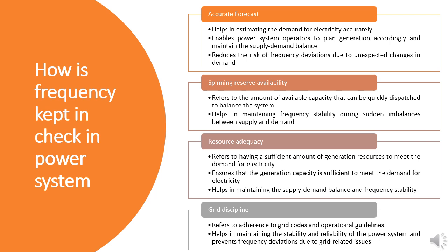Spinning reserve availability is another key factor in maintaining frequency stability during sudden imbalances between supply and demand. Spinning reserve refers to the amount of available capacity that can be quickly dispatched to balance the system. Resource adequacy refers to having a sufficient amount of generation resources to meet the demand for electricity, helping to maintain the supply-demand balance and frequency stability. Grid discipline is also essential — adherence to grid codes and operational guidelines helps prevent frequency deviations. By ensuring that all system operators follow the same rules and procedures, grid discipline helps maintain consistency and stability in the power system.